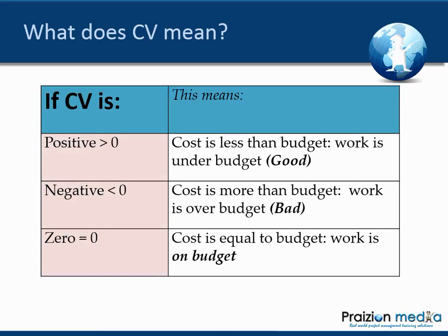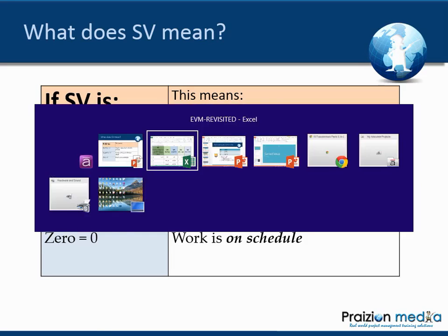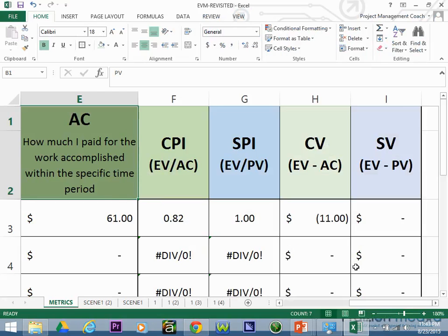For variances: greater than 0 is good, less than 0 is bad, equal to 0 means on target. Schedule variance greater than 0 is good, less than 0 is bad, equal to 0 means work is on schedule. We could go into more detail, but at a high level this helps us understand the first example on screen.